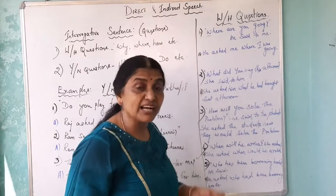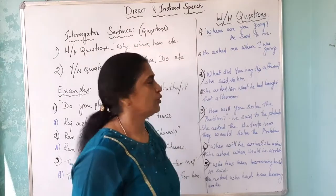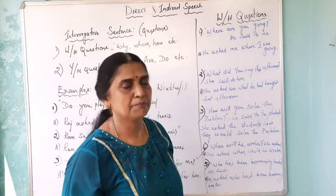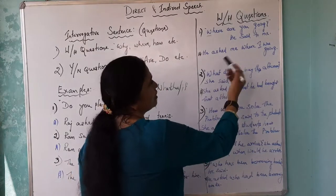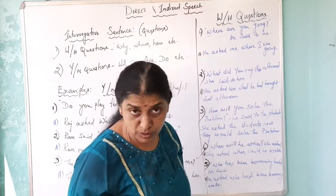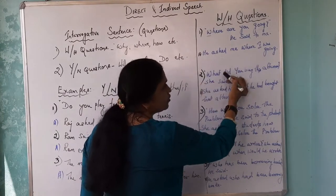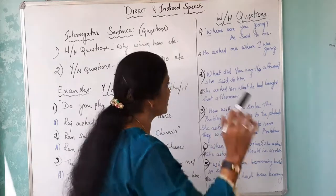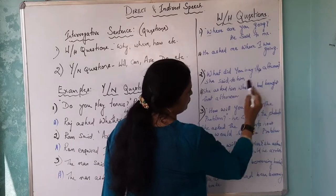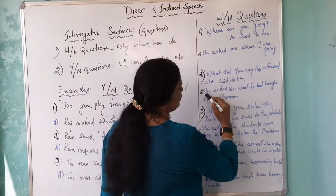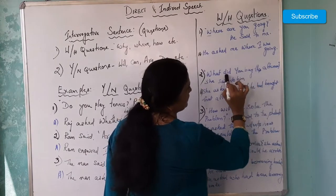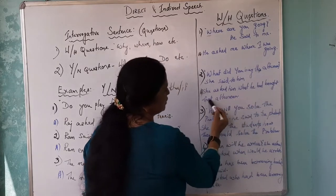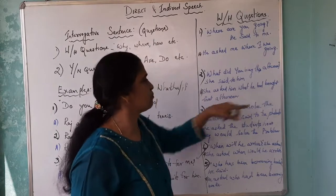Next: 'What did you buy this afternoon?' She asked him. 'Did buy' indicates past tense, because 'did' plus the verb makes it past. When changing past tense from direct to indirect speech, it becomes past perfect tense. After the word 'what,' you write the subject. So: 'She asked him what he had bought that afternoon.' Note that 'this afternoon' also changes to 'that afternoon.'